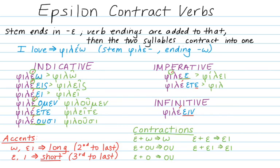In the second plural, epsilon-epsilon contracts to eta, and the accent is involved in the contraction, so we get a circumflex on our new syllable: phileîte. And in the infinitive, epsilon plus alpha contracts to eta, and the accent becomes a circumflex, giving us phileîn.